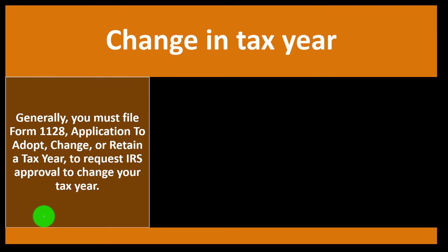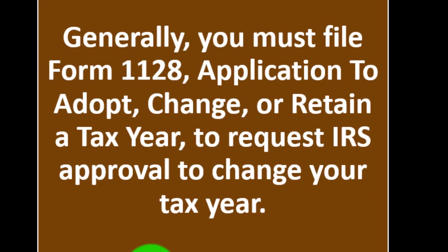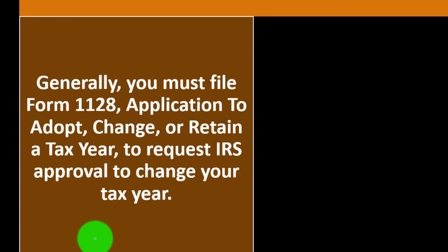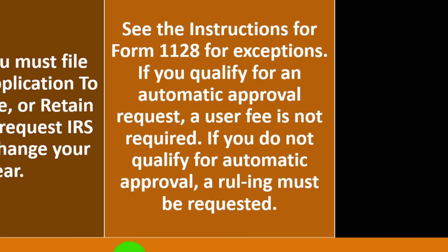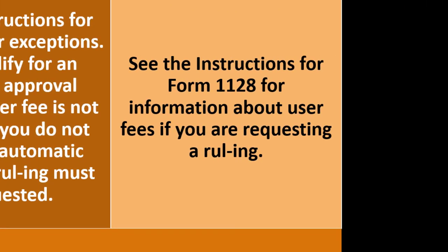If you want to change your tax year, the IRS doesn't make it easy — you need a valid reason. Generally, you must file Form 1128, Application to Adopt, Change, or Retain a Tax Year, to request IRS approval. This is why it's important to get things lined up correctly in year one to remain consistent. If you qualify for an automatic approval request, a user fee is not required; otherwise, a ruling must be requested. See the instructions for Form 1128 for exceptions and user fee information.